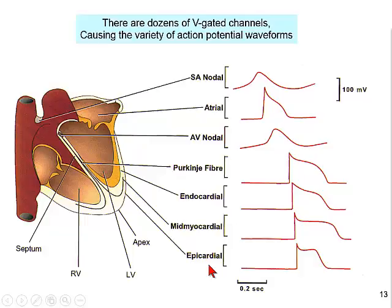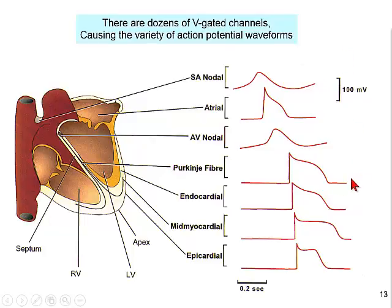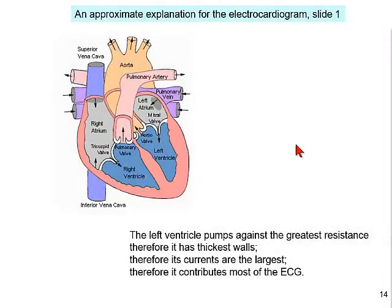The action potential as it progresses from the top to the bottom of the heart changes its waveform. Those waveforms have significant selective advantage for the function of the various regions of the heart. At the sinoatrial node, which is a pacemaker organ, the waveform looks as though it's getting ready to fire another spike. Likewise, at the atrioventricular node there is also endogenous pacemaker firing. The left ventricle, which generates the major force, needs to be triggered by the atrioventricular node, pumps against the greatest resistance, has the thickest walls, and therefore its integrated currents are largest and contribute most to the electrocardiogram.